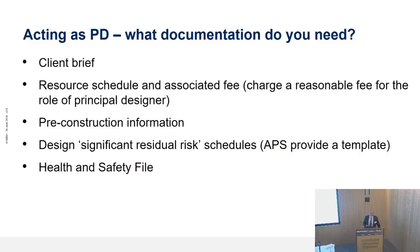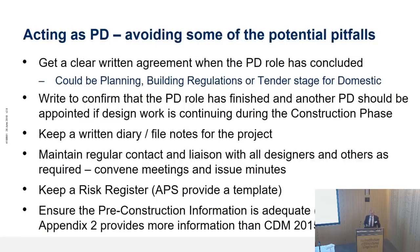The APS — the Association of Project Safety — helpfully provides a free template for the risk schedule. On pitfalls and how to avoid them: get clear agreement about when the role is concluded, because you might not be there for the whole project and you don't want the liability to last that long. Particularly for domestic jobs it could be just at planning, building regs, or tender stage. Write to confirm when the role is finished, but also state that the client needs another principal designer if there's going to be more design work during the construction phase. For all duty holders, I always say: keep a diary, day book, or file notes — it makes life so much easier if something goes wrong that you've got contemporary notes. Maintain regular contact with other designers — that helps get things done and demonstrate that you are ensuring the other designers are doing their duties.